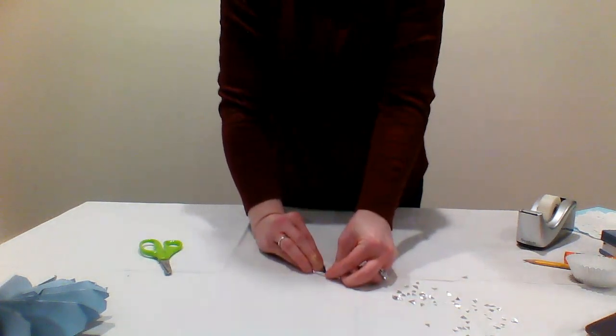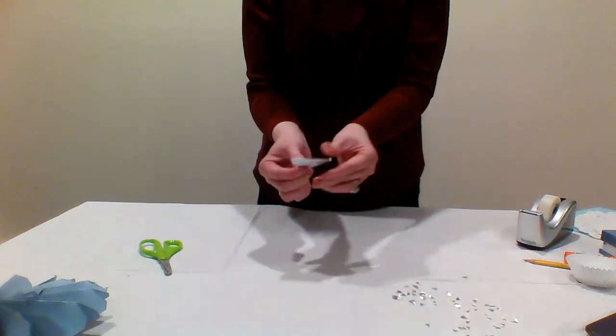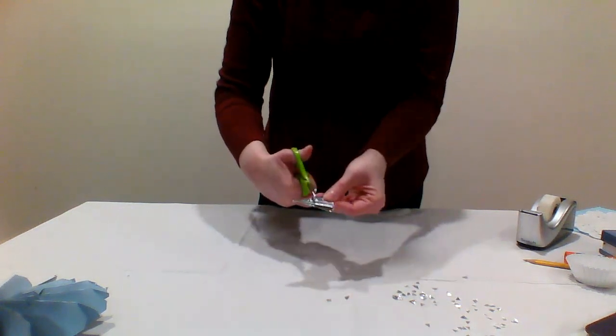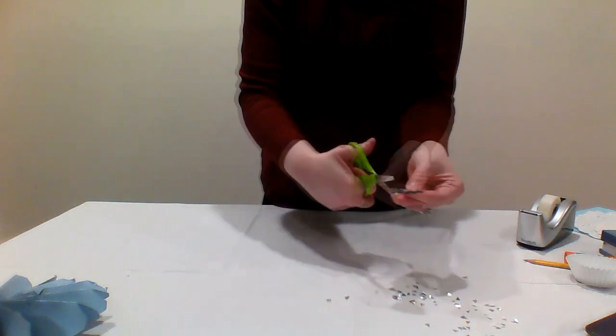Fold as many times as you can until you have a small triangular shape. Use your scissor to cut small triangles or other designs along the edges of the cupcake liner.